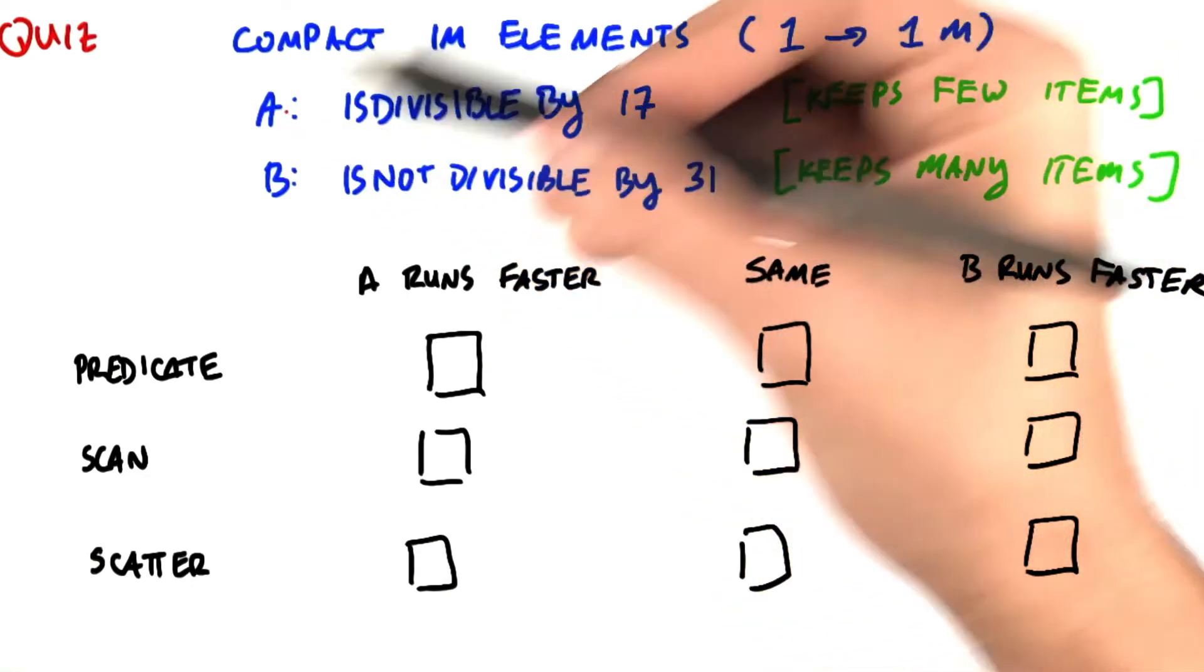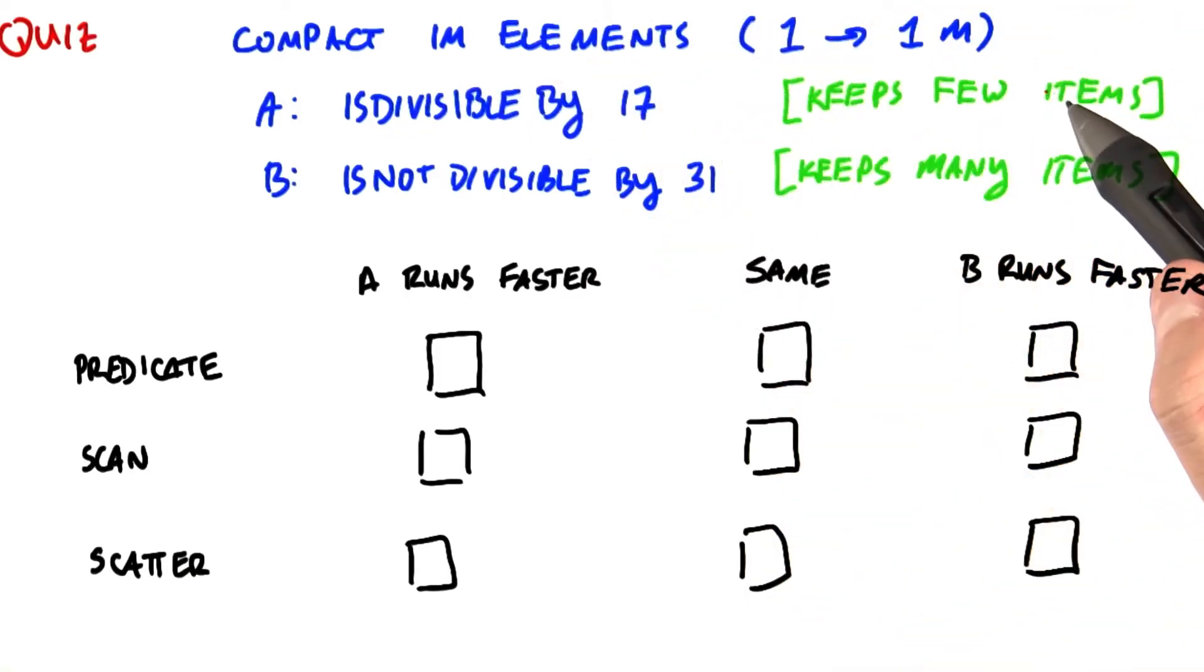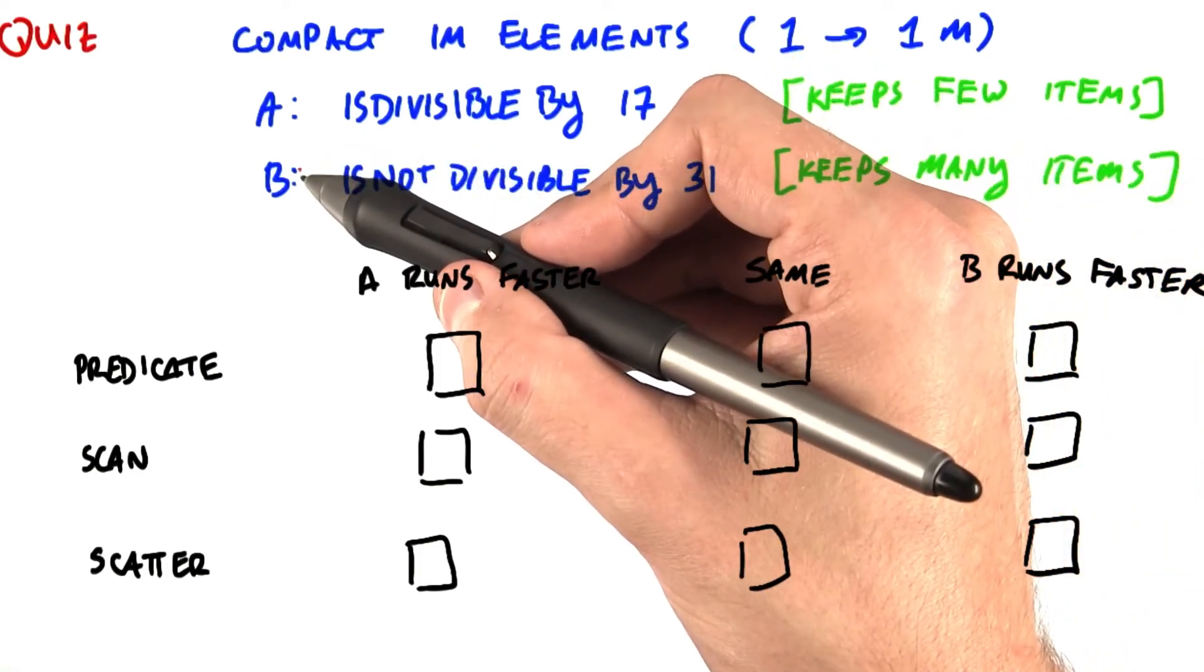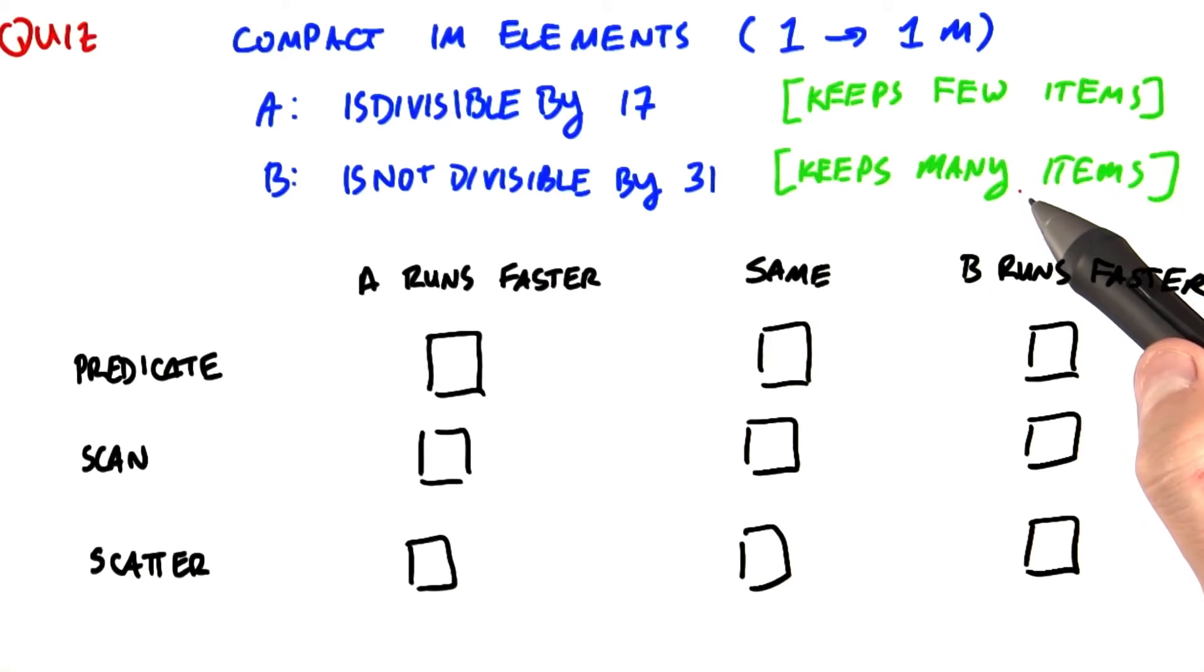Compact operation A, is divisible by 17, is only going to keep very few of the input items. Whereas compact operation B, is not divisible by 31, is going to keep most of the input items.